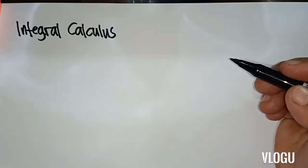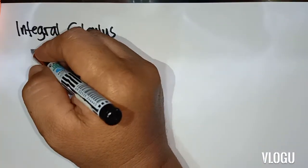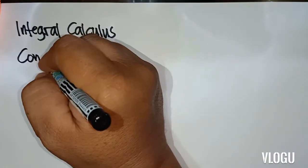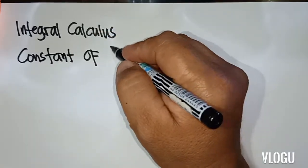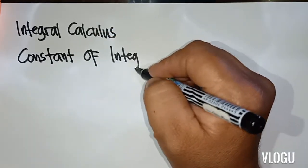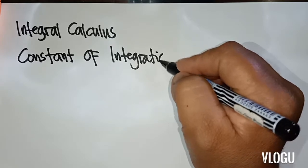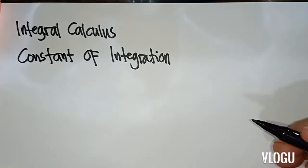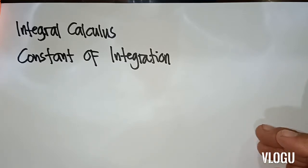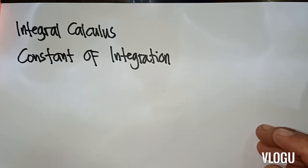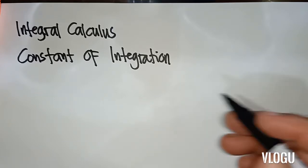We start with the constant of integration. In integral calculus, for indefinite integration, we will have plus C in each answer, so we will discuss where that plus C comes from.